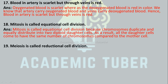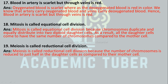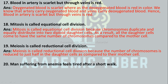Meiosis is called reductional cell division. Why? Meiosis is called reductional cell division because the number of chromosomes is reduced to just half in the daughter cells as compared to their mother cells.